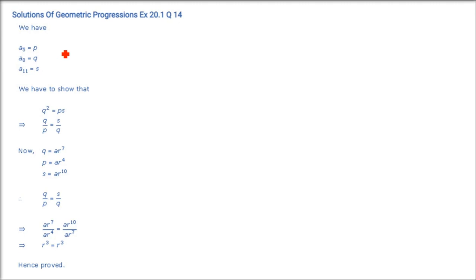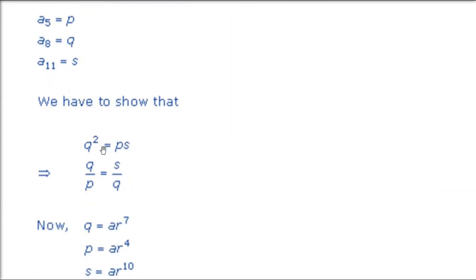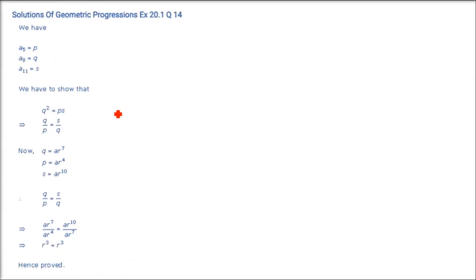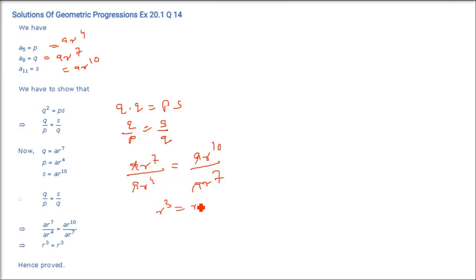Next: the 5th, 8th, and 11th terms of a GP are P, Q, and S. Prove Q² = PS. We write A5 = AR^4 = P, A8 = AR^7 = Q, A11 = AR^10 = S. Then Q/P = AR^7/AR^4 = R^3, and S/Q = AR^10/AR^7 = R^3. So Q/P = S/Q, which gives Q² = PS. Proved.